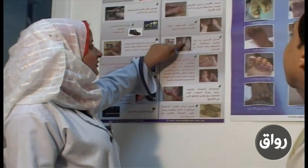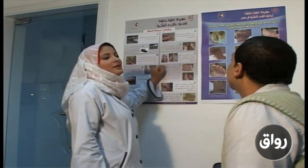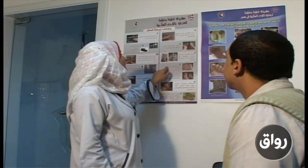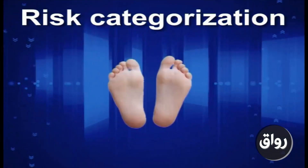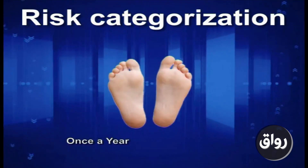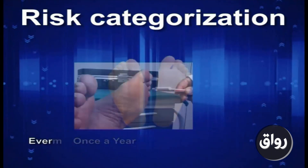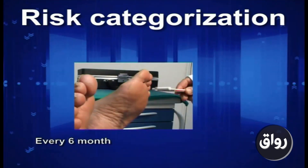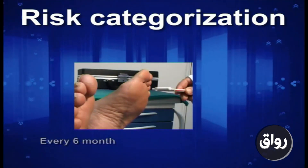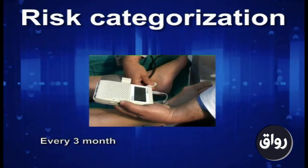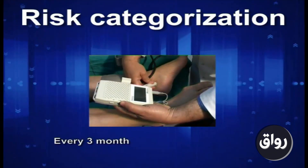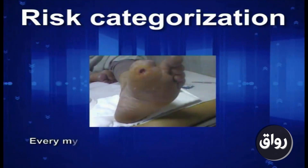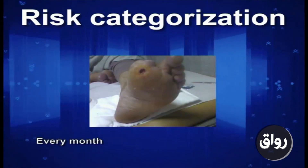Before the patient leaves the clinic, they should be instructed about foot care. At the end of examination, the frequency of follow-up visits depends on risk categorization: no sensory neuropathy — once a year; sensory neuropathy — every six months; sensory neuropathy with signs of peripheral vascular disease and/or foot deformity — every three months; previous ulcer and/or amputation — every month.